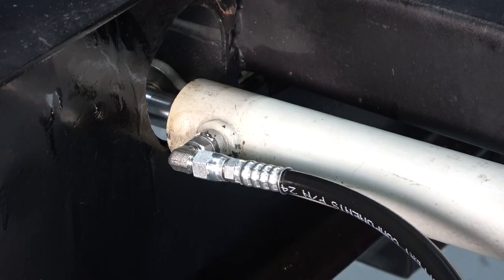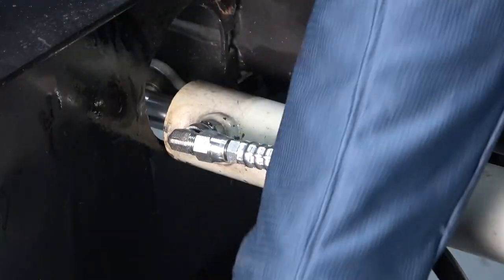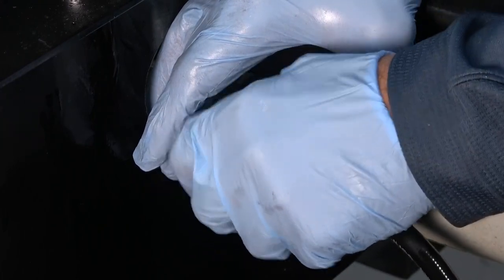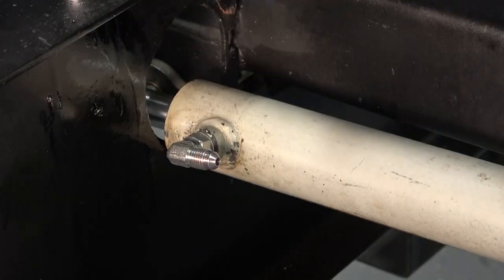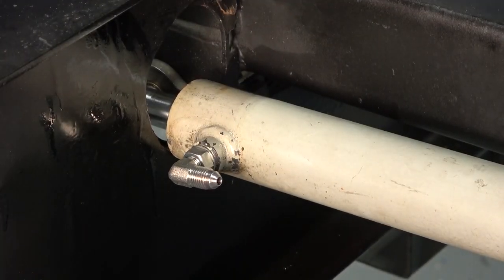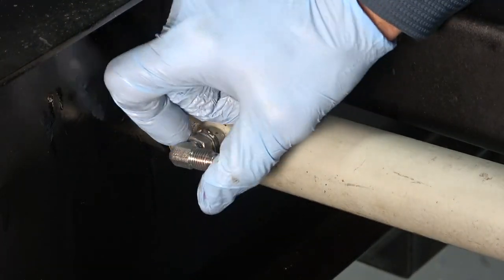The next step is to remove the retract fitting and hose from the old cylinder. Just like with the extend side, remove the hose first. Again, be cautious of fluid pressure whenever you are opening a hydraulic line. Once the hose is removed, remove the retract fitting as well.